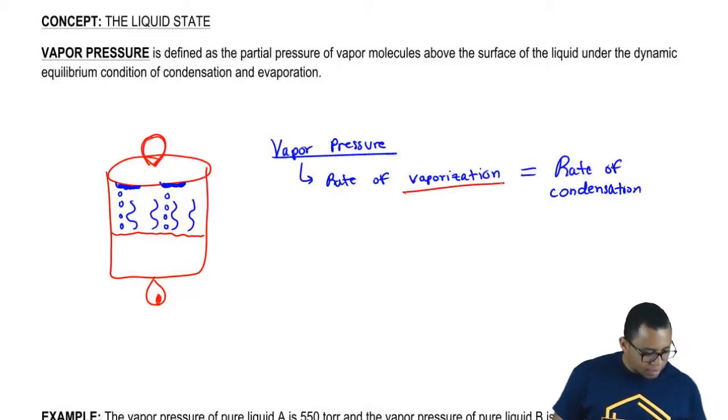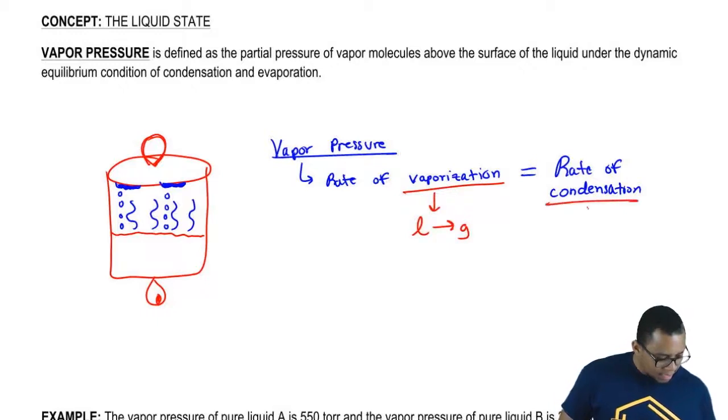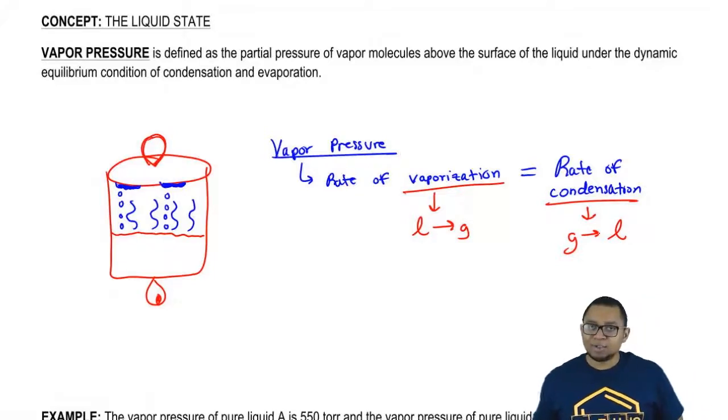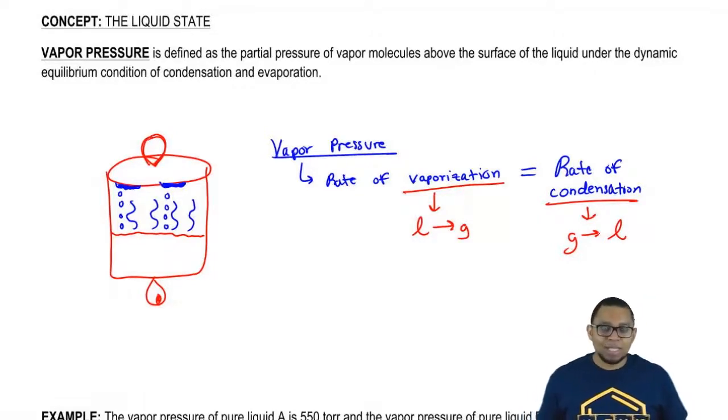And remember, vaporization we're going from liquid to gas and then condensation we're going from gas back down to liquid. So vapor pressure is basically when these things are in equilibrium with each other.